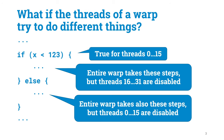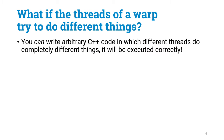During the else-branch, threads 0–15 are disabled. The same idea holds for all other cases in which the threads of a warp would like to do different things. If you have a for loop in which one thread takes 1 million iterations, then the entire warp will take 1 million iterations. Threads that run fewer iterations are just marked as disabled in the execution mask. So any C++ code will work correctly — it will do whatever you want, and you don't directly see that the threads of a warp are tightly coupled together.